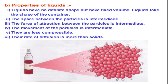Properties of liquid: Liquids have no definite shape but have fixed volume. Liquids take the shape of the container. So, liquid ka apna koi shape nahi hota, par hum usko jaise bhi container mein daltay hain, woh waise shape ka ho jata hai — that is why we say liquids take the shape of the container. Second, the space between the particles is intermediate. In the case of solid, the space between particles was minimum, and in the case of liquid it is intermediate.